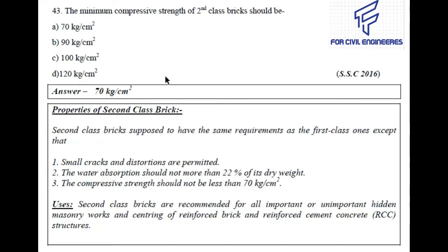Question number 43: The minimum compressive strength of second class brick should be — the right answer is 70 kg/cm². This question came in SSC 2016.